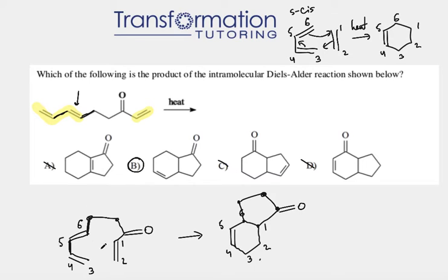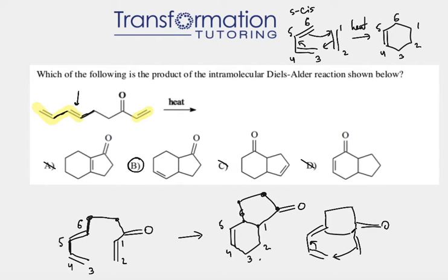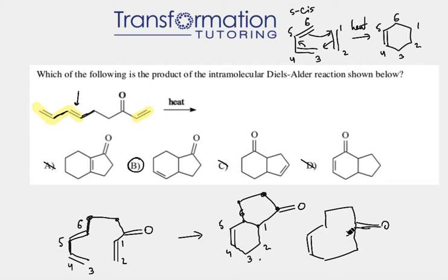Another way to find the product is to draw the arrows and follow them. Aligning the molecule is very useful here. The first arrow gets rid of the first double bond and connects those two carbons. The second arrow gets rid of this double bond and makes a new double bond here. The third arrow gets rid of this double bond and connects the remaining two carbons.